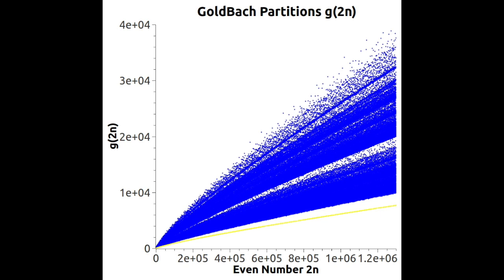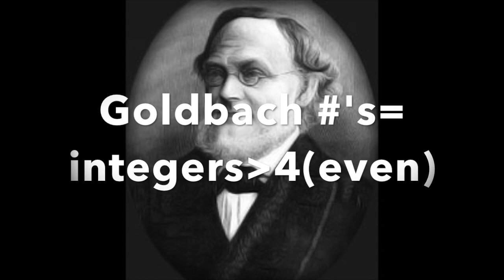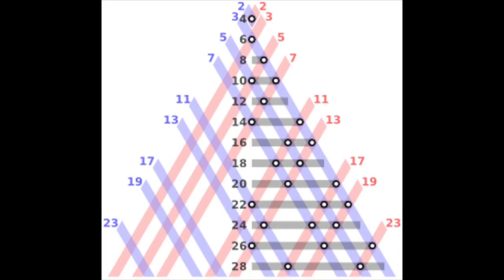The conjecture has been shown to hold for all integers less than four times ten to the eighteenth, but remains unproven despite considerable effort. Since four is the only even number greater than two that requires the even prime two in order to be written as the sum of two primes, another form of the statement of Goldbach's conjecture is that all even integers greater than four are Goldbach numbers.